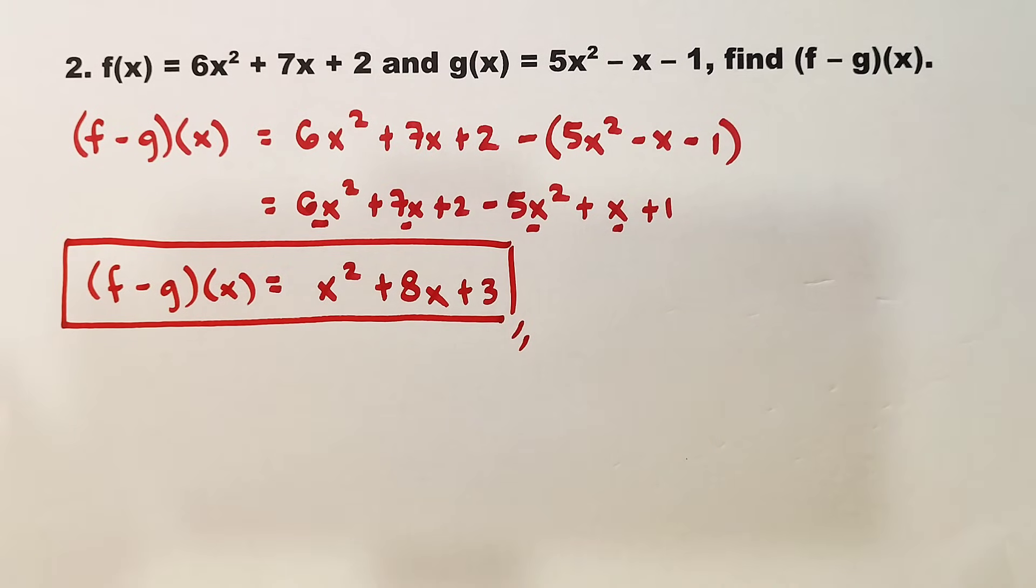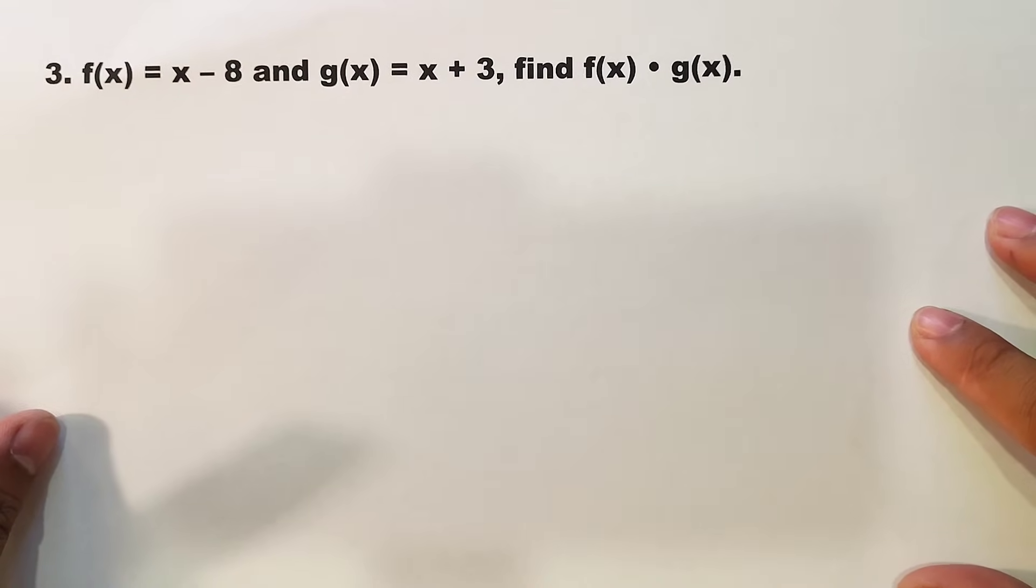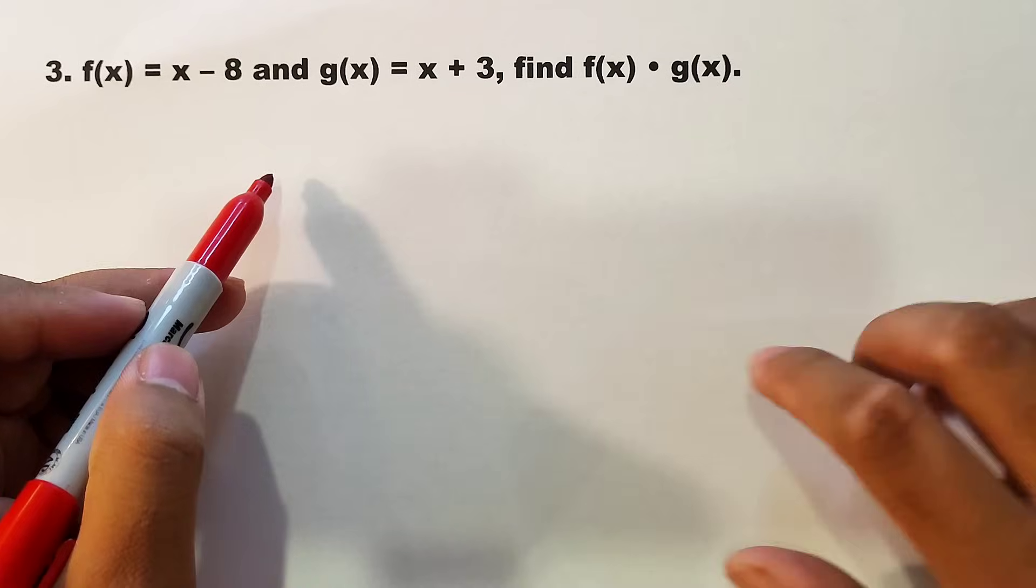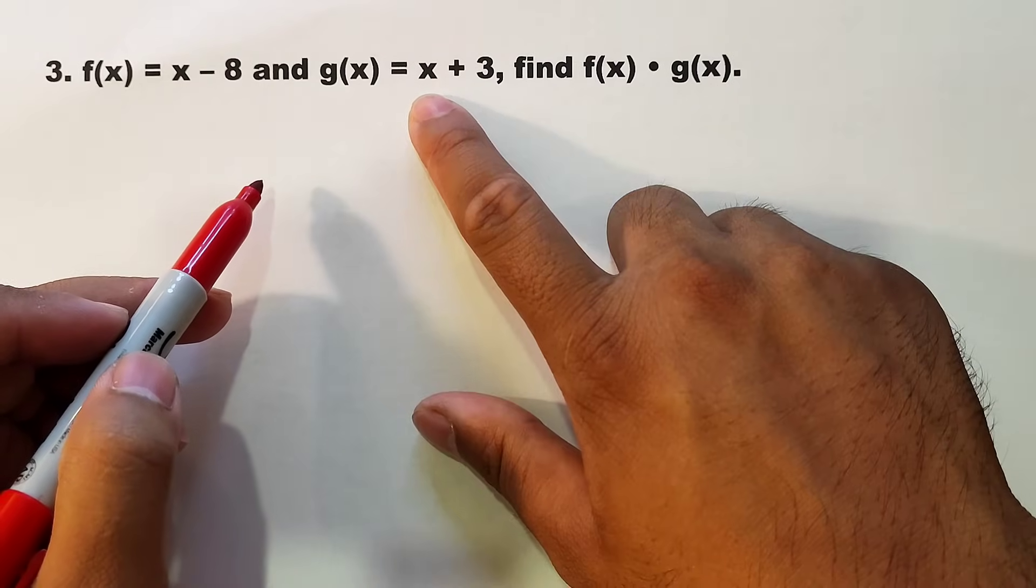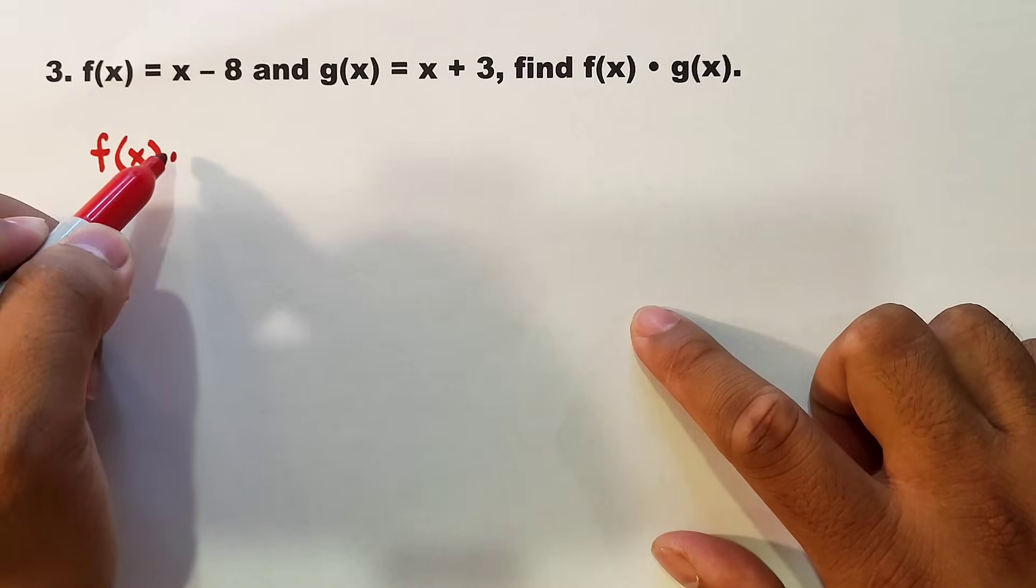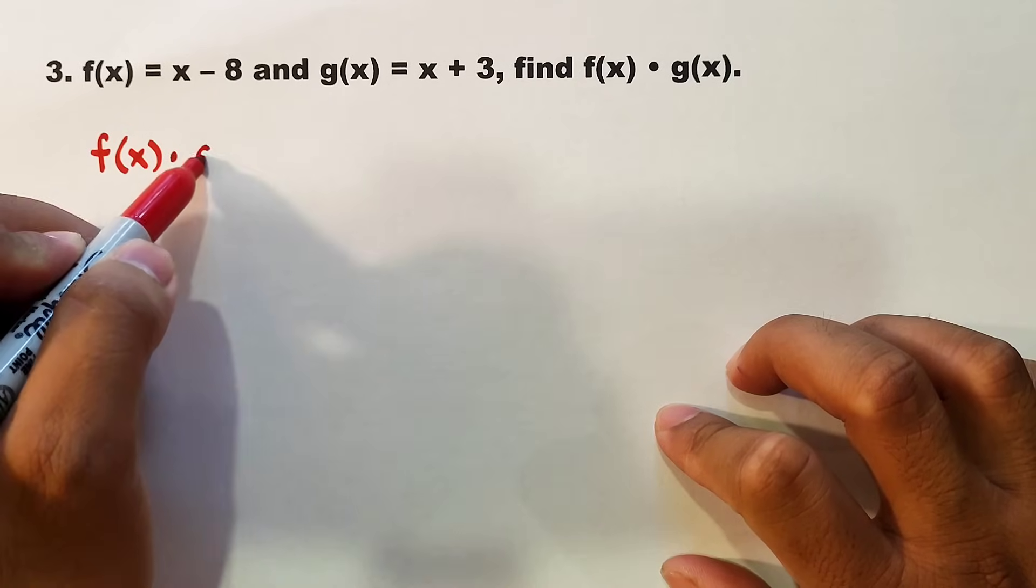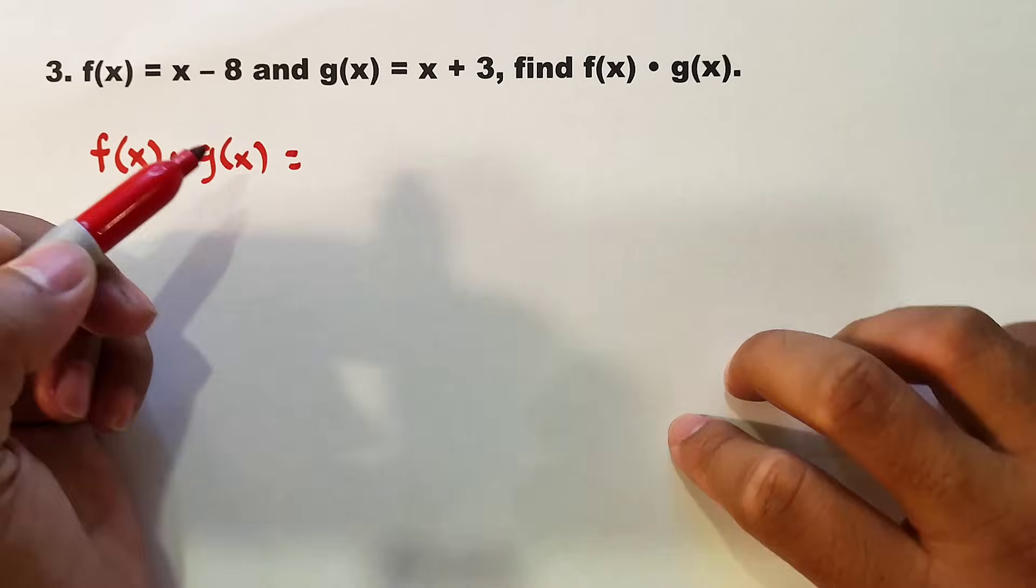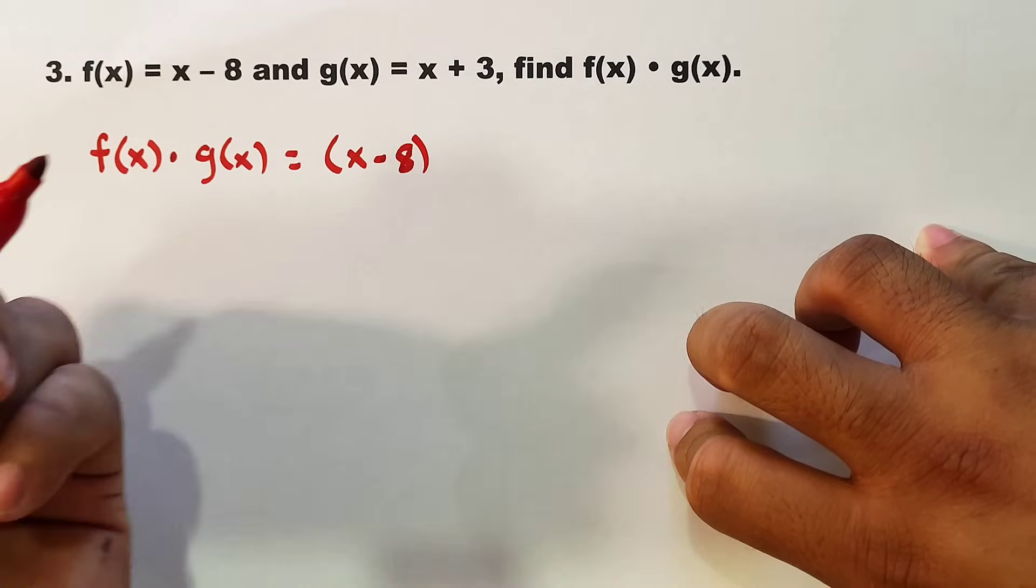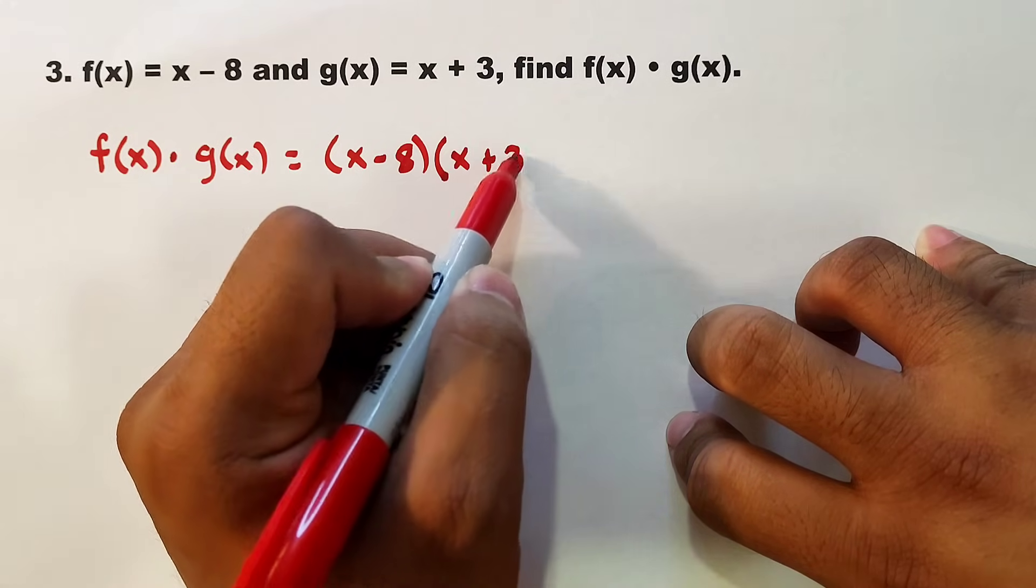Now let's move on to our last example. This time, it's multiplication. We have f(x) = x - 8 and g(x) = x + 3. We are asked to find f(x) · g(x). This dot means you need to multiply. First, your f(x), which is x - 8, enclose it in parentheses, times your g(x), which is x + 3. How do we multiply those expressions?